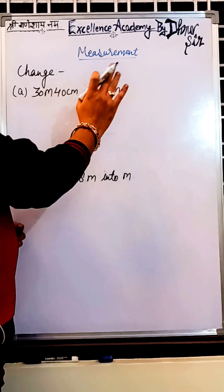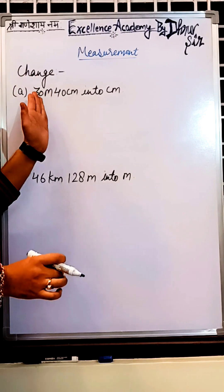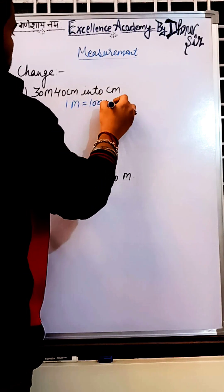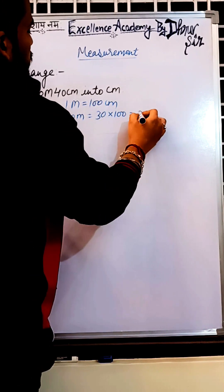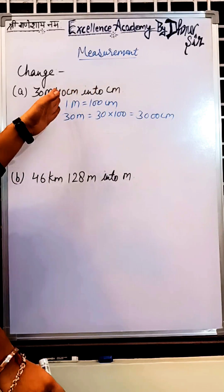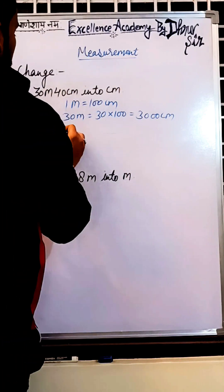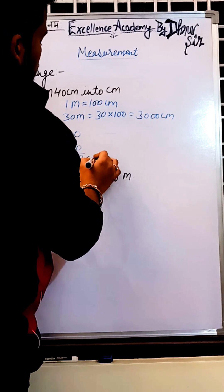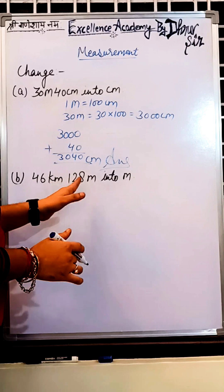In the first question, we have to change 30 meter 40 centimeter into centimeter. The 40 centimeter is already in centimeter, so we only change the 30 meters. We know 1 meter equals 100 centimeters, so 30 meter equals 30 × 100 = 3000 centimeter. Now we add the 40 centimeter: 3000 + 40 = 3040 centimeter is the answer.